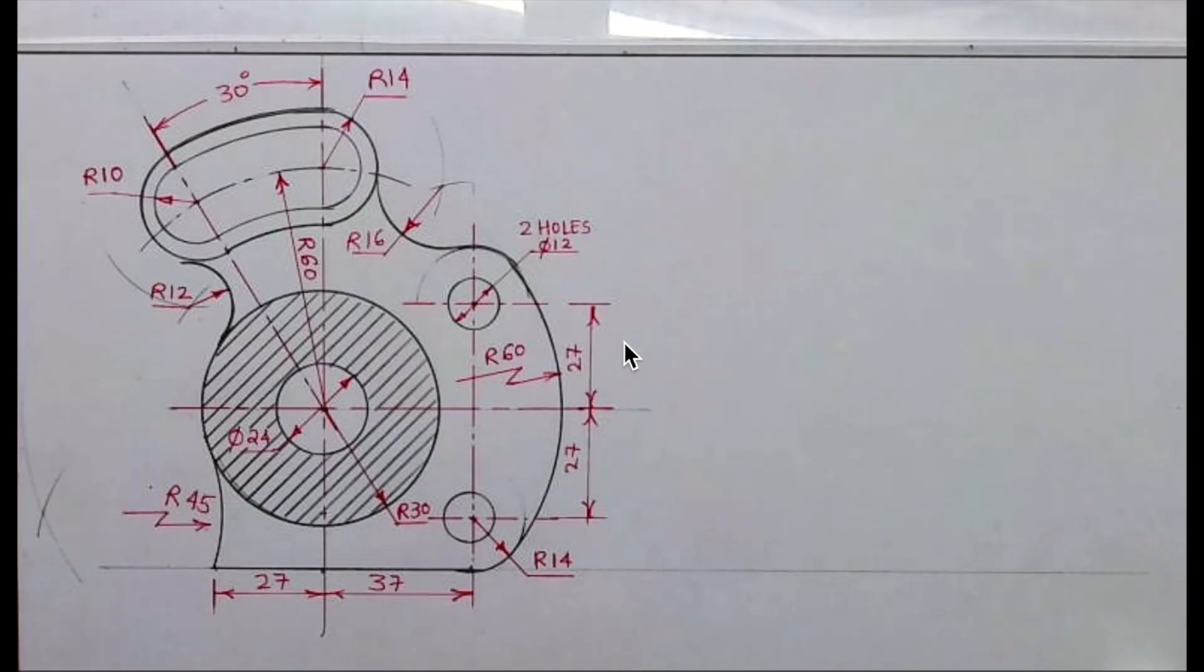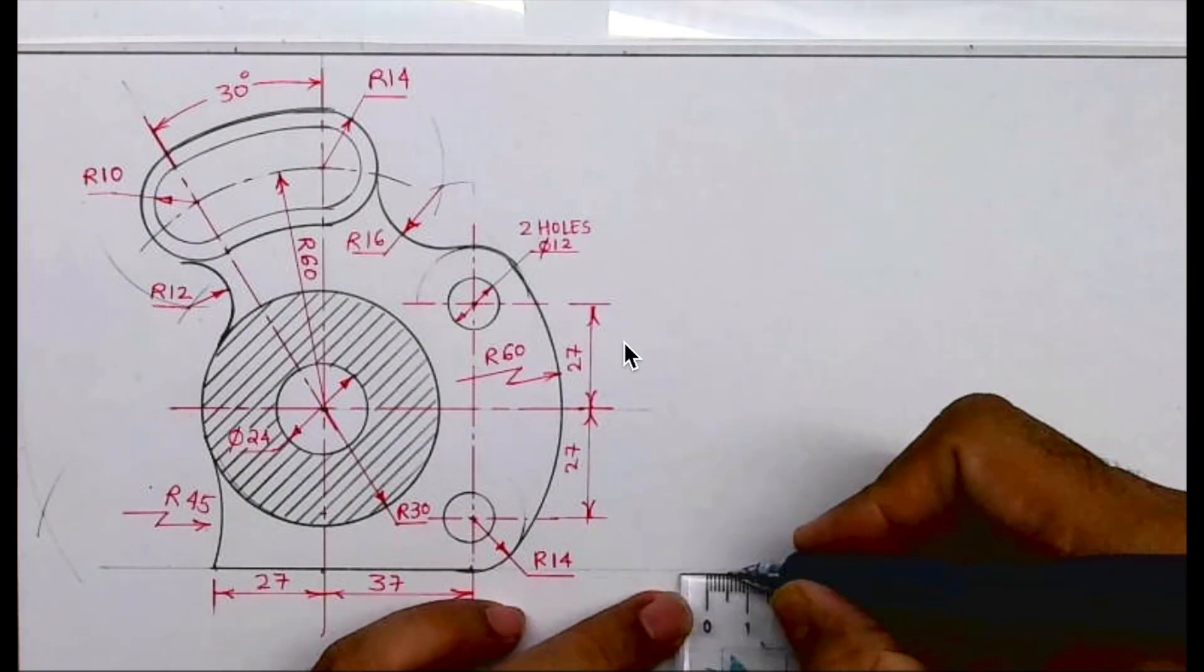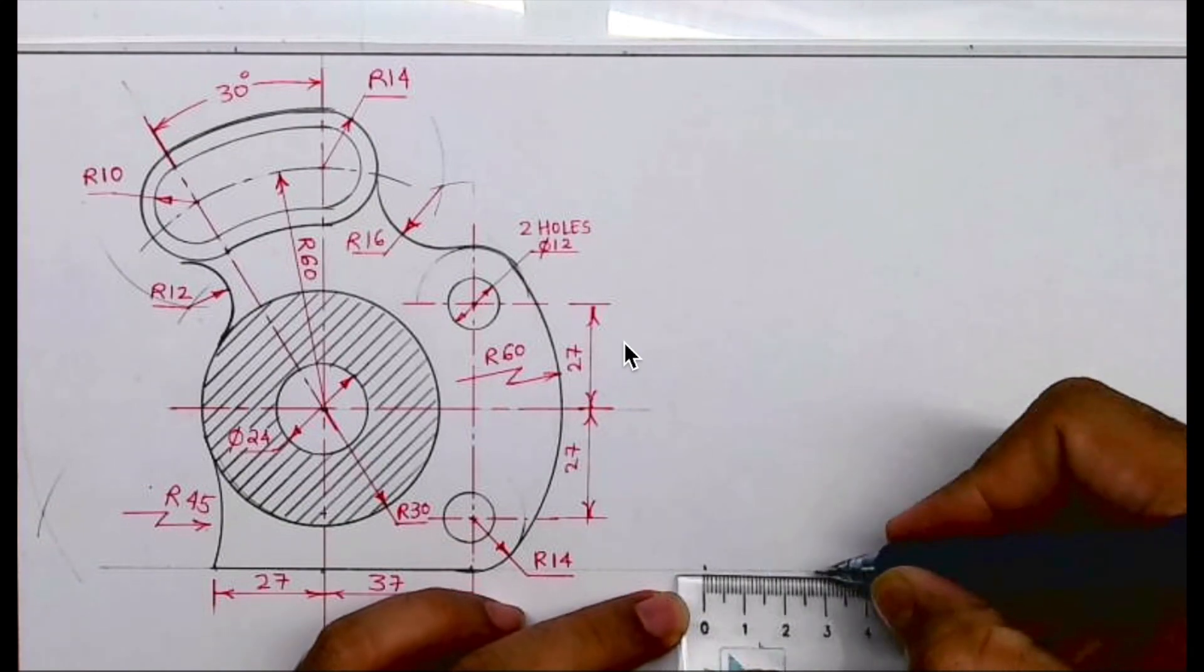Welcome to technical drawing. Today we will see this. We have to copy it ditto same. First, we will draw one horizontal line. I will mark 27 and 37.